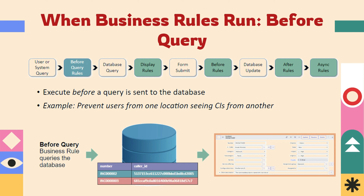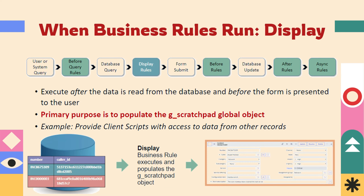The display business rule works after data is read from the database and before the form is presented to the user. Its primary purpose is to populate the g_scratchpad global object, which will be used inside an onload client script to fetch database or server side values. Whatever we are requesting from the client side — that data from the database is executed and populates the g_scratchpad object using the display business rule.